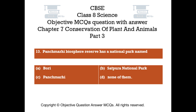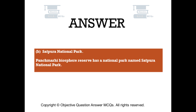Question number 13. Pachmarhi Biosphere Reserve has a national park named: Option A - Bori. Option B - Satpura National Park. Option C - Pachmarhi. Option D - None of them. The right answer is Option B: Satpura National Park. Pachmarhi Biosphere Reserve has a national park named Satpura National Park.